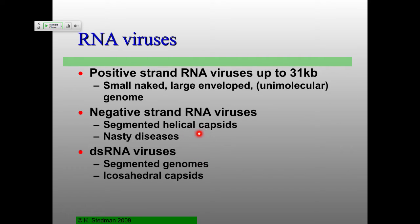Ebola is one of the examples of negative-stranded RNA viruses. What's everyone else's favorite negative single-strand RNA virus that kills multiple orders of magnitude more people per year than Ebola ever has? Influenza. Everyone get their flu shots? Flu spreads really well about a meter away from people, so look around, see how close the seats are. We'll talk a lot more about flu as we move along.